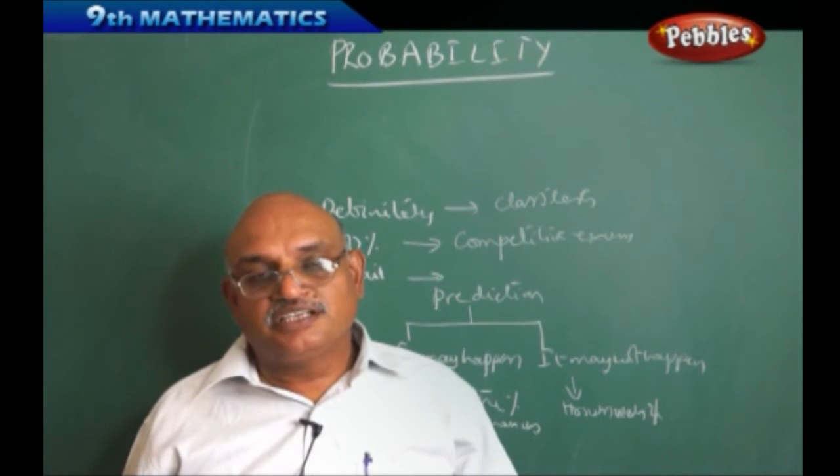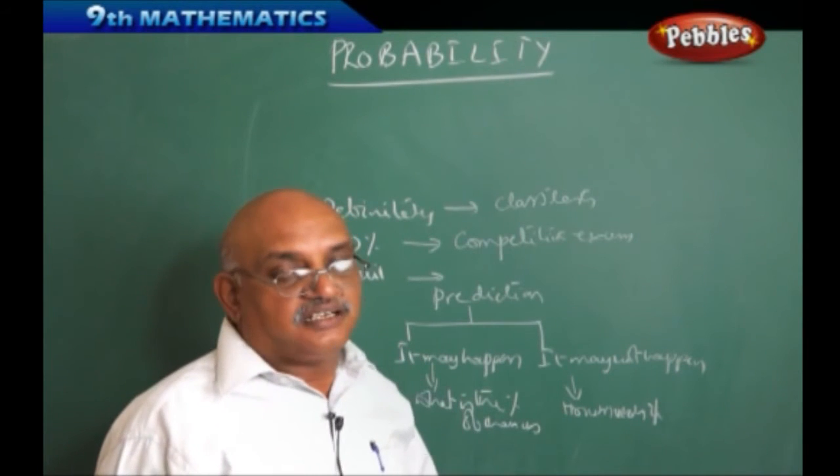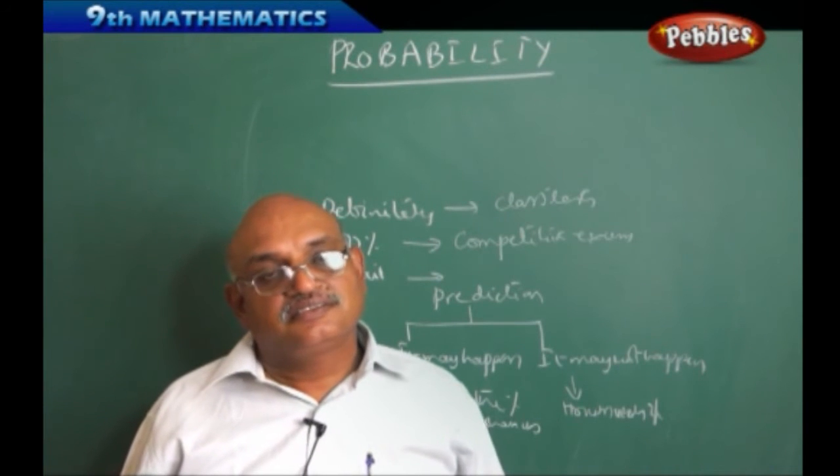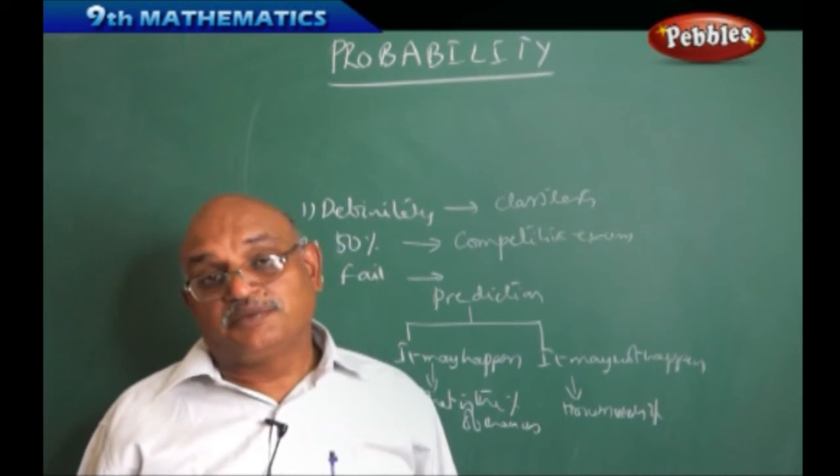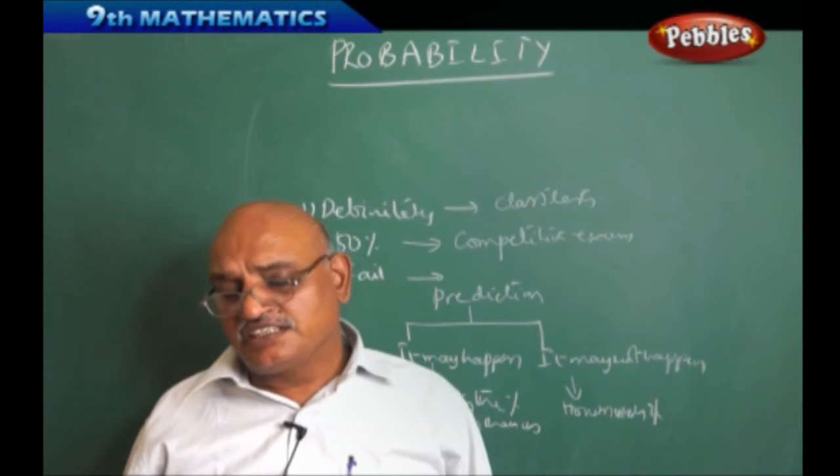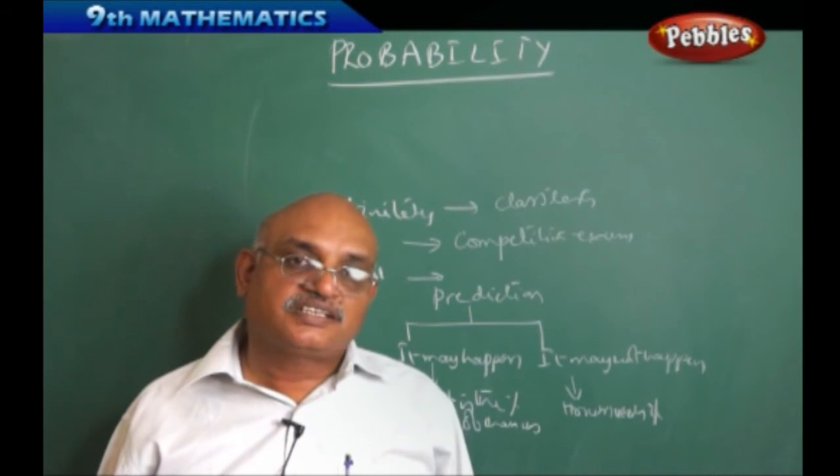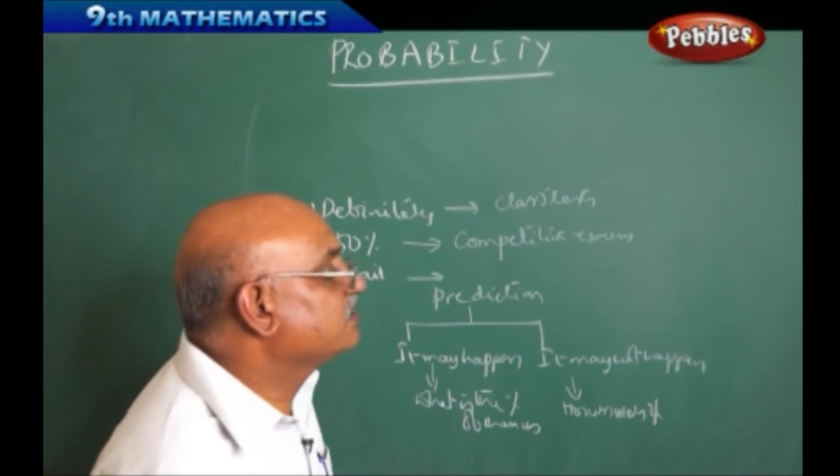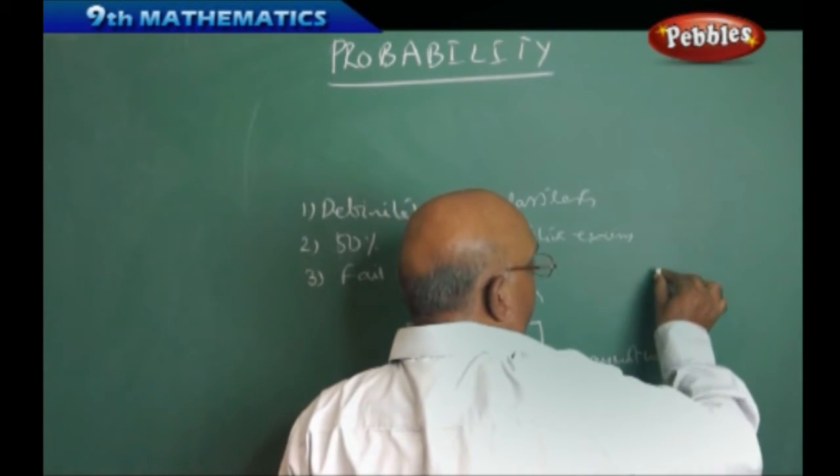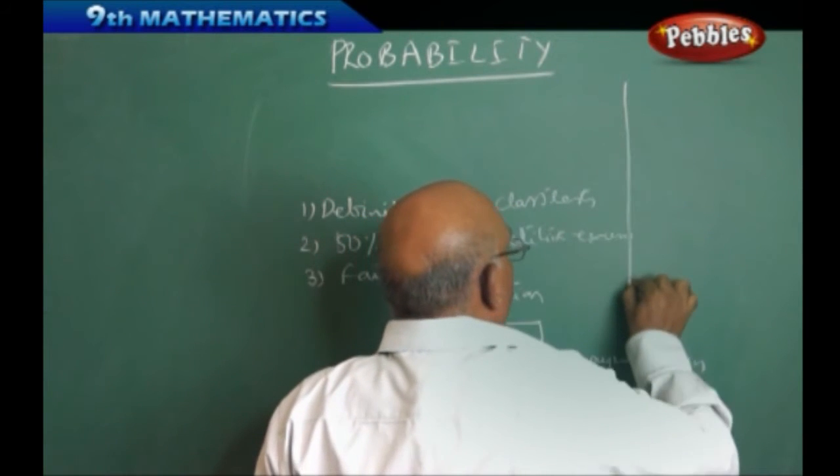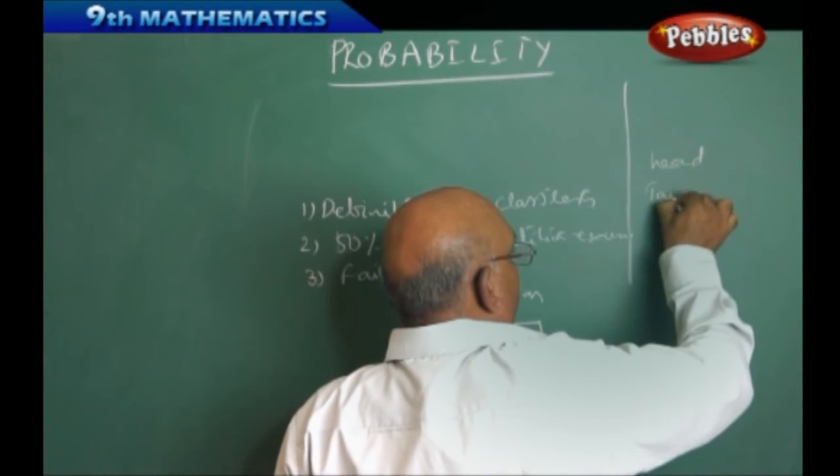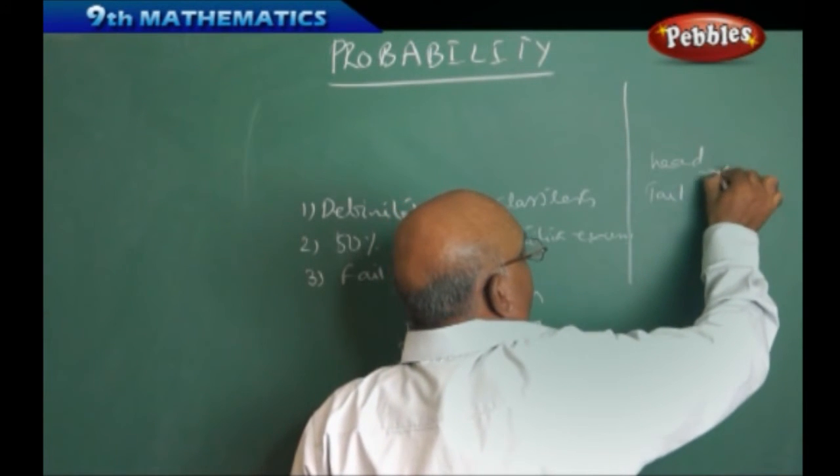Therefore, probability always speaks about the chances of happening, but not definitely whether it happens or not. It never gives any sort of assurance whether it happens or not. For example, if you toss a coin, when you toss a coin you may say that definitely head may appear or tail may appear. That implies 50-50 chances are there.